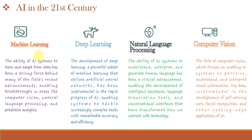AI in the 21st century uses machine learning to learn from data and make predictions without specific programming. Deep learning, a subset of AI, copies the human brain's neural networks, enabling breakthroughs in tasks like image and speech recognition. Natural language processing allows AI systems to understand and generate human language, powering virtual assistants like Alexa and Siri, and language translations. Computer vision enables AI to interpret visual information from images and videos, advancing applications like autonomous vehicles and facial recognition.